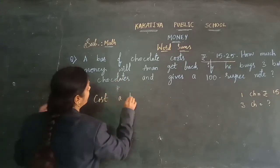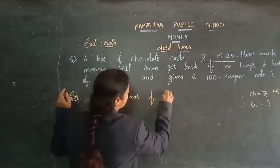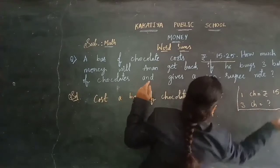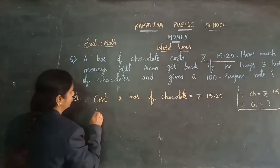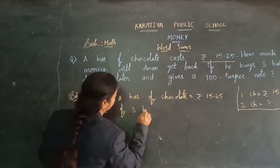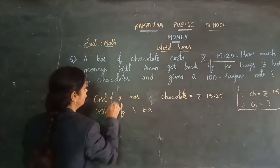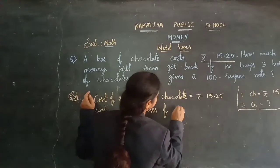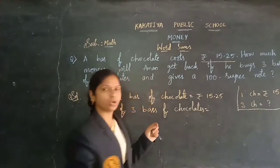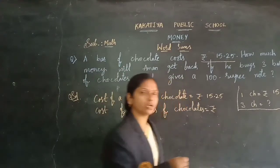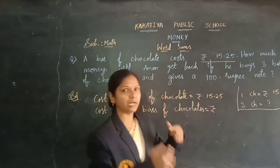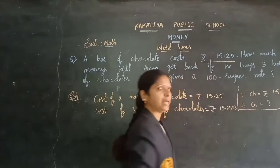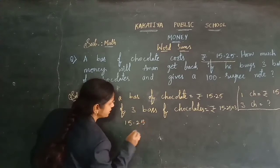Cost of a bar of chocolate is 15 rupees 25 paise. Let's find the cost of 3 bars of chocolates. So how do you find the 3 chocolates cost? We know 1 and more we are finding means multiplication — 1 chocolate cost we are multiplying by 3 chocolates. So 15 rupees 25 paise into 3. Let's multiply.